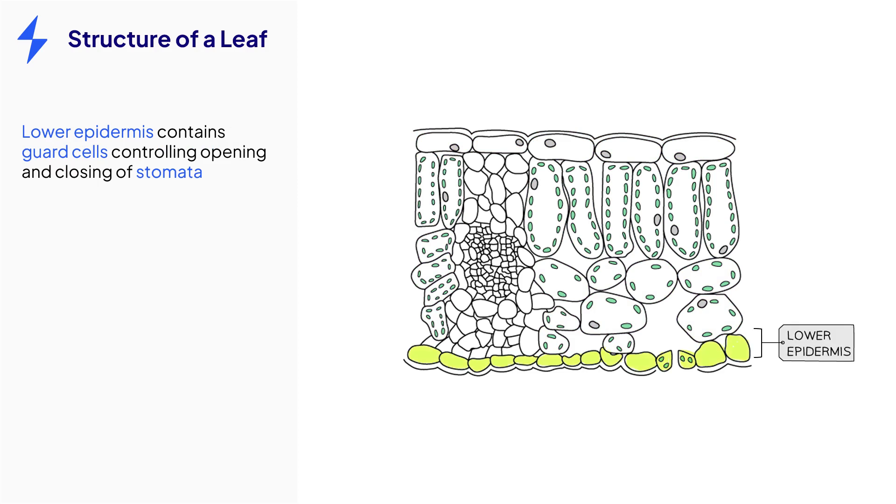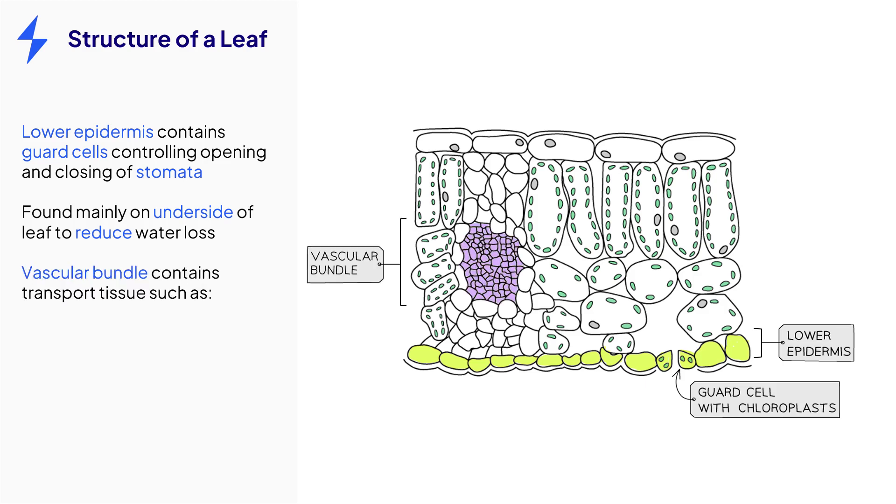The lower epidermis contains guard cells that surround the stomata. The guard cells are the only epidermal cells that contain chloroplasts and they control the opening and closing of the stomata to allow carbon dioxide to diffuse into the leaf and oxygen to diffuse out. In most plants, stomata are found in a much greater concentration on the underside of the leaf to reduce water loss.